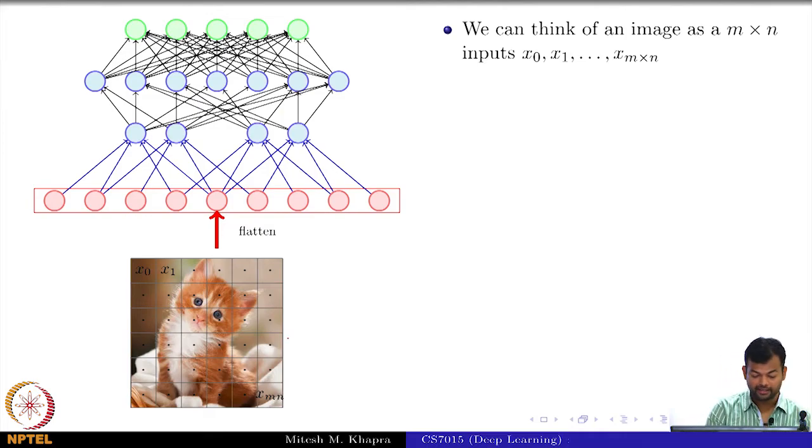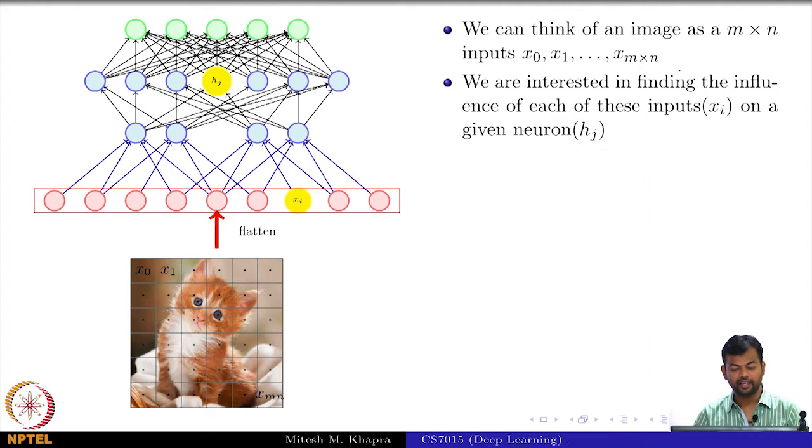So, we can think of an image as an m cross n inputs going from x_0, x_1 all the way up to x_m×n, nothing great about that, and we are interested in finding the influence of each of these inputs on a given neuron.